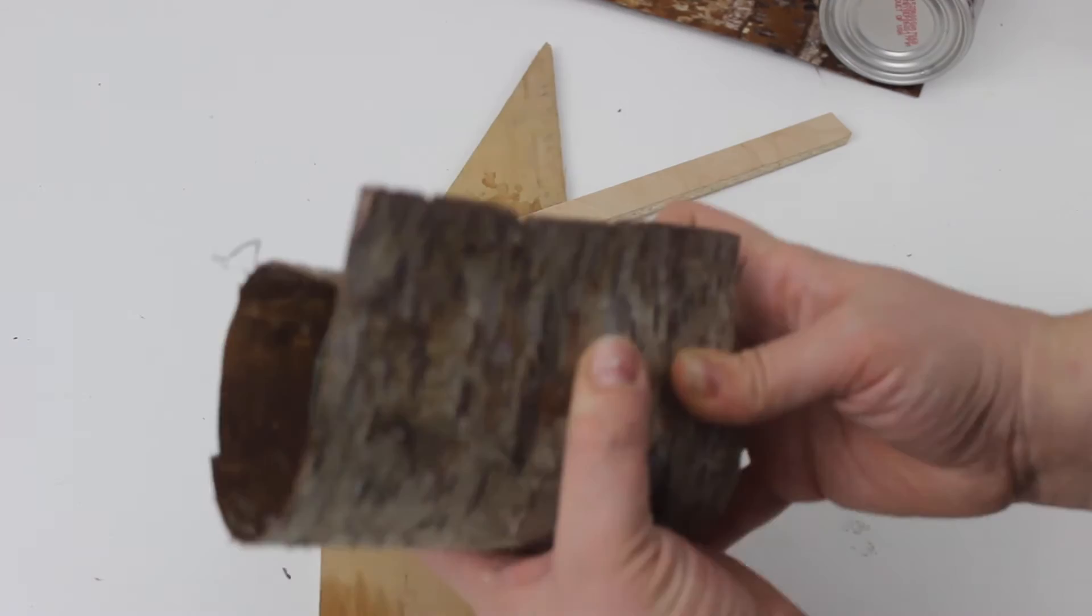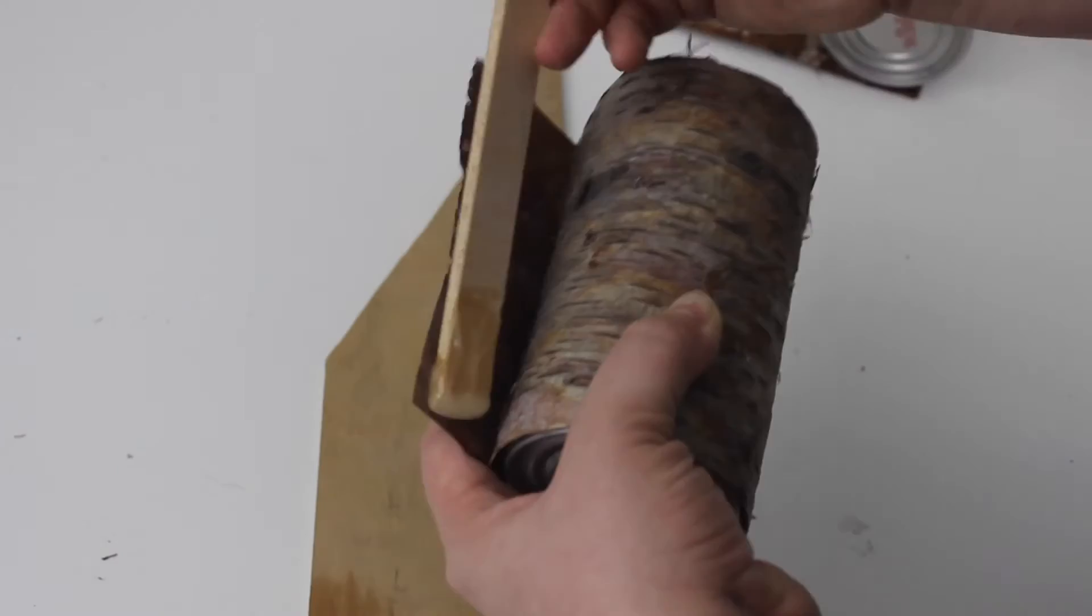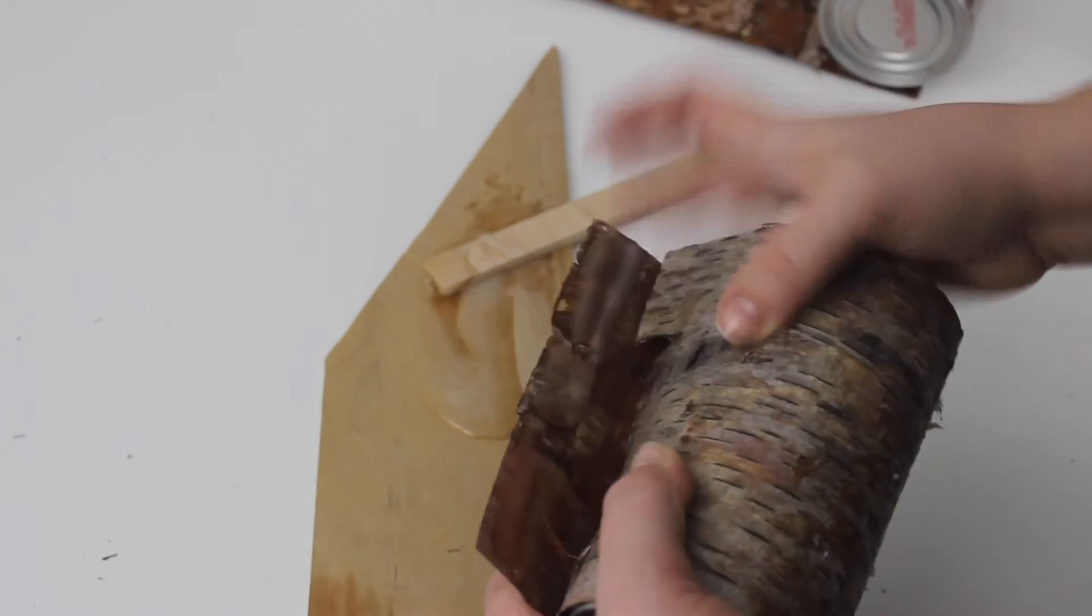Once that piece is set, roll your birch bark sheet so that it completely covers the tin can or vase. When that's in place, use the epoxy again to attach the bark to itself.